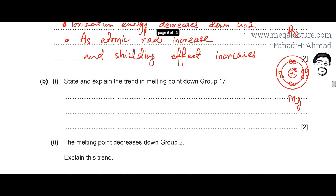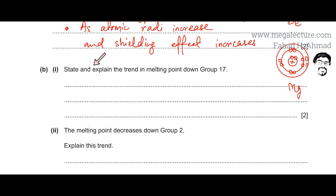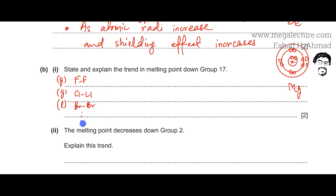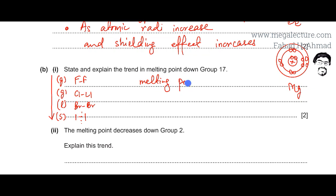Moving to part B: state and explain the trend in melting points down group 17. Group 17 contains fluorine, chlorine, bromine, and iodine. Fluorine and chlorine are gases, bromine is a red-brown liquid, and iodine is a solid. So melting points increase down group 17 as the elements become more solid.